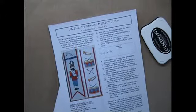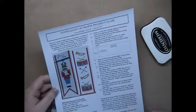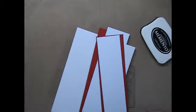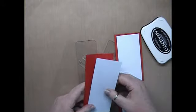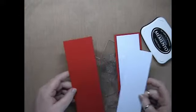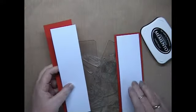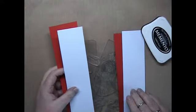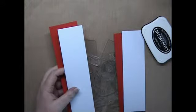This is the Dimension Stamps Project Club for November 2013, issue number 75. I've already pre-cut my card. We've got two pieces of red that measure 21 centimeters by six and a half centimeters wide, and two white ones that measure 21 centimeters by five and a half centimeters wide.